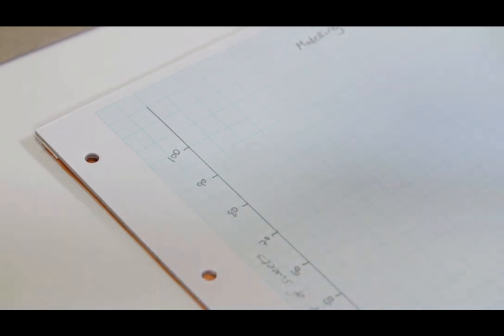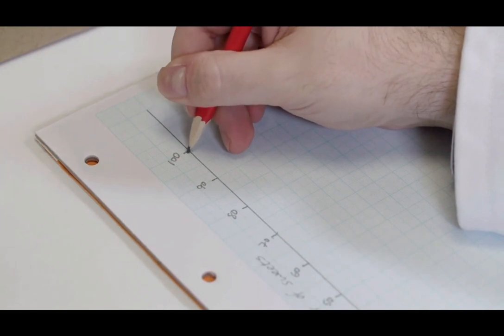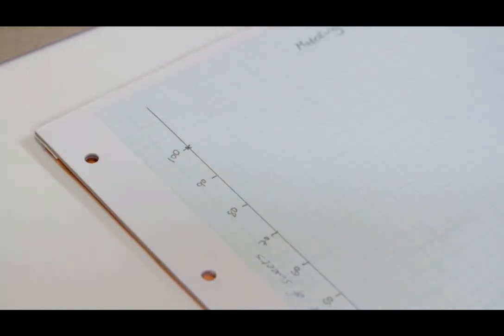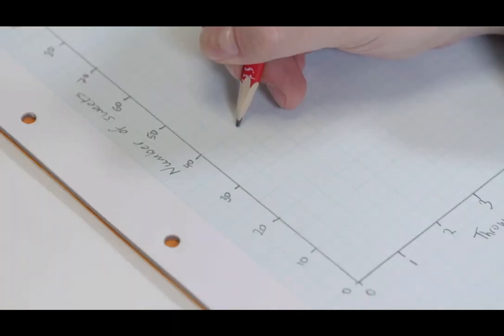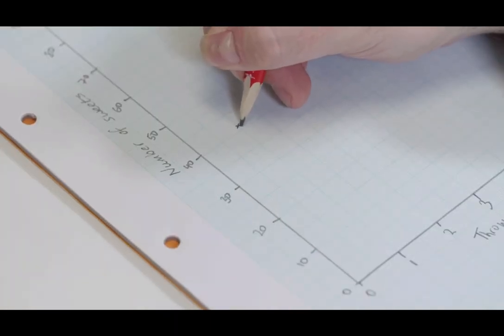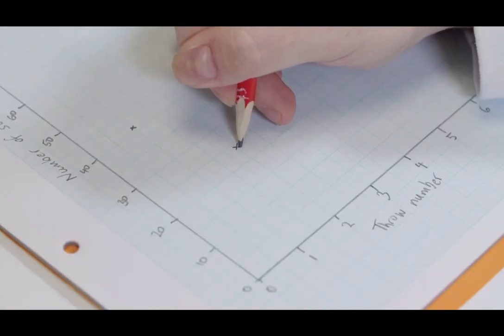A cross is placed on the graph for every result in the table. There were 100 sweets undecayed before the first throw, so this is the first plot made on the graph. The other plots are drawn on the graph, marking the number of sweets that remained for each throw.